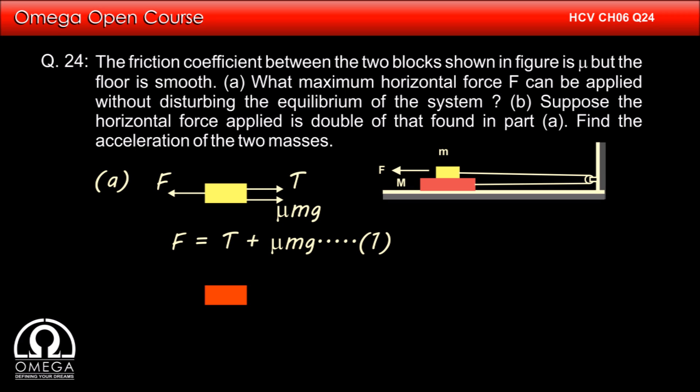Now let us draw the free body diagram of the lower block. Since the friction is acting on the top block towards right, the lower block will experience friction mu mg towards left. Tension in the string will oppose this friction.